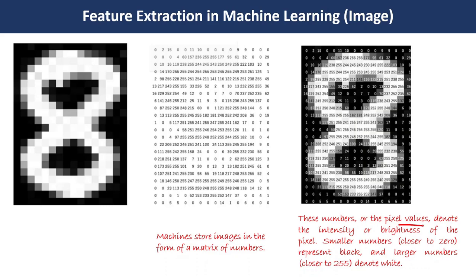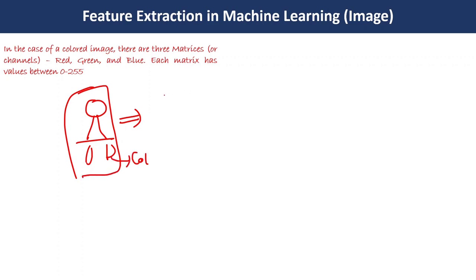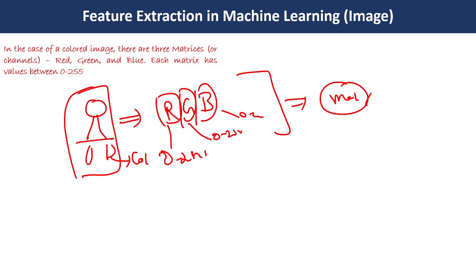These numbers are pixel values that denote the intensity of the brightness. Whenever we have a low value, it means that area is dark; whenever we have a high value, it means it is lighter and brighter. In the case of a colored image, we have three channels — RGB — and each channel has pixel values from 0 to 255. So we have to convert these images into a matrix as per our requirement.